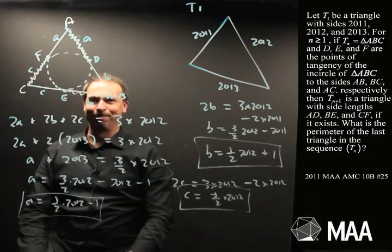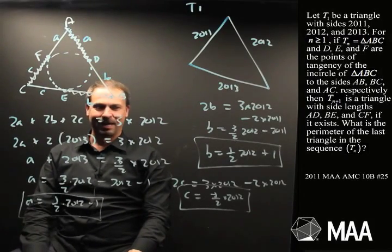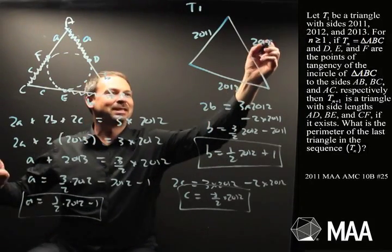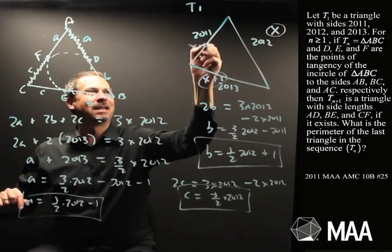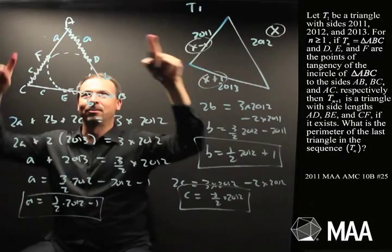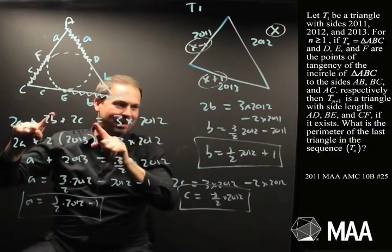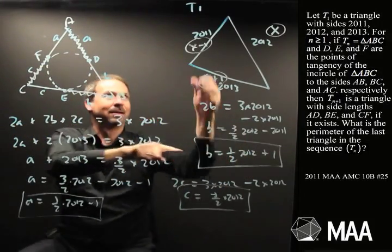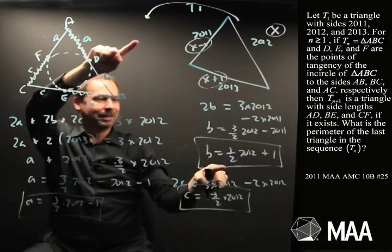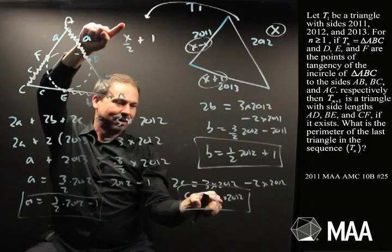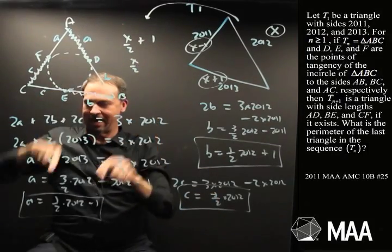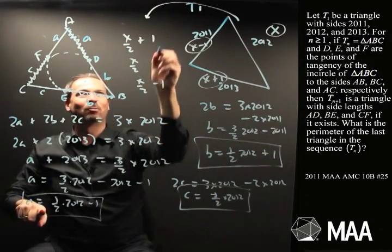I'm feeling good about this. Basically, we started with one number x, a number x plus one, a number x minus one. We found what the next triangle has to be. And it's really, let's do it here. The next triangle is half of x, plus one, and half of x, and half of x minus one.